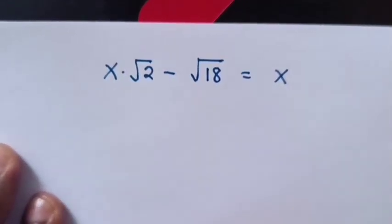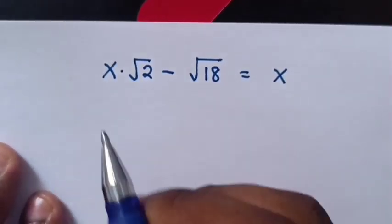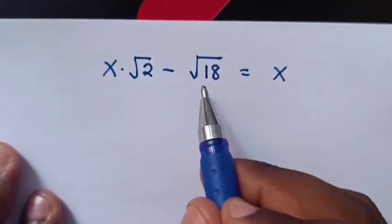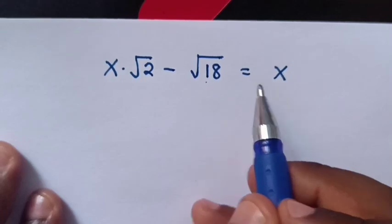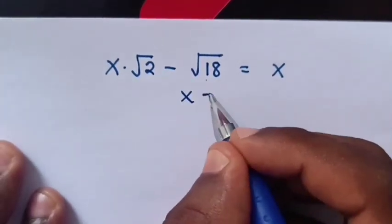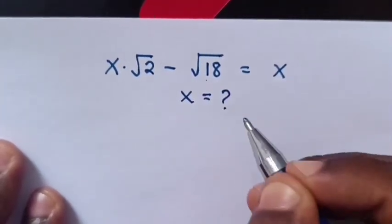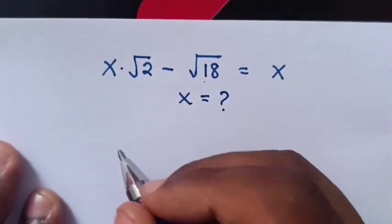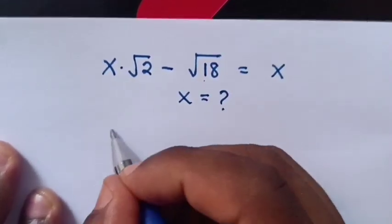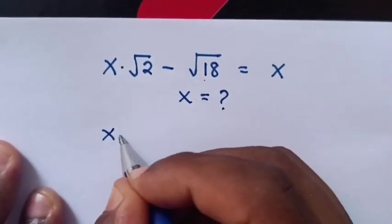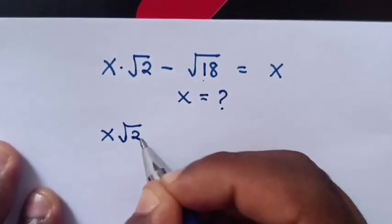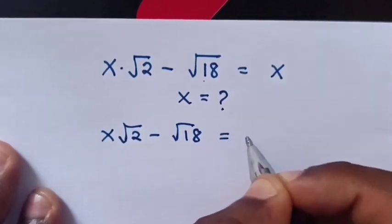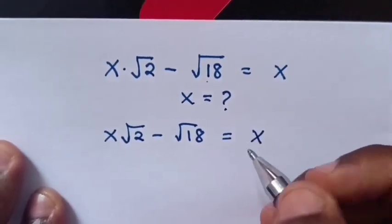Hello. How to solve x times square root of 2 minus square root of 18 is equal to x. Find the value of x. Now, from the equation x square root of 2 minus square root of 18 is equal to x.